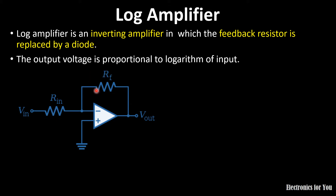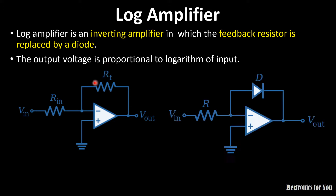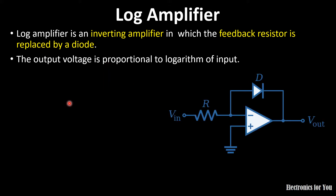If we replace this feedback resistance with a diode, then this circuit is called a log amplifier — a logarithmic amplifier. Therefore, the output voltage is proportional to the logarithm of the input. The definition of a logarithmic amplifier is: it is a circuit in which the output voltage is proportional to the logarithm of the input.